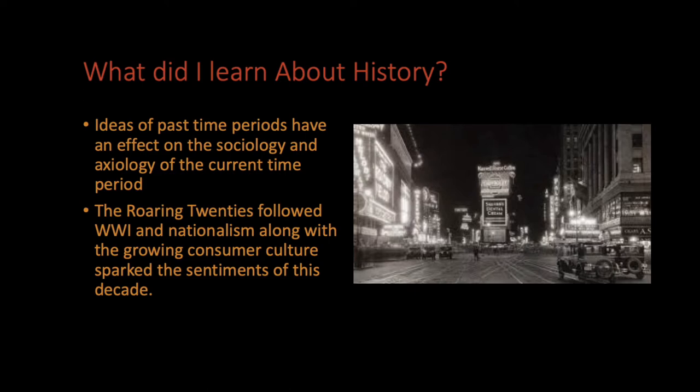So what did I learn about history from this? Ideas of past time periods had an effect on how people viewed how society should work and what their societal values were. Like I was talking about with consumerism, we see continuity from the late 19th century with the rise of big businesses and large department stores and this new American identity based in consuming material goods. This new economic idea tied closely into how society was constructed — as seen in this picture — where now there's a lot of advertising and it's all about getting the latest new object or new source of entertainment.